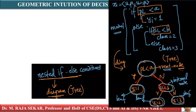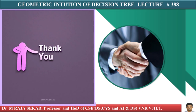Decision trees are very simple to understand and highly interpretable. Decision tree models are highly interpretable because you can read them as logical statements. For example: if petal length is less than A, then the class label is one. Extremely interpretable — we can read them in simple English or simple logical statements in any programming language. I will continue the discussion on geometric intuition of decision trees in lecture number 389. Thank you very much.